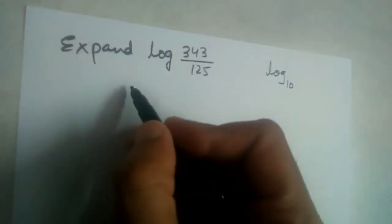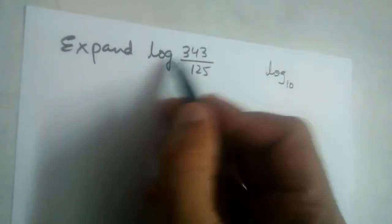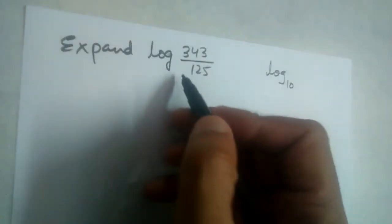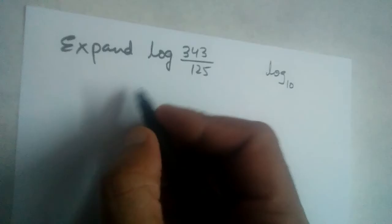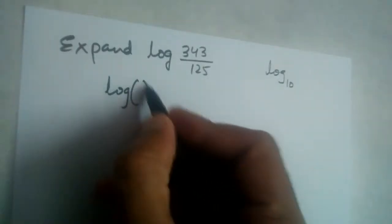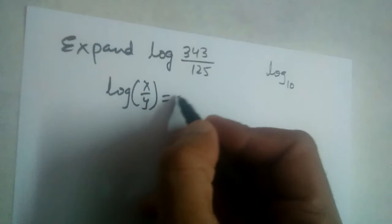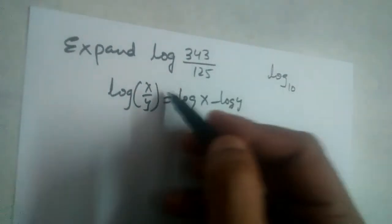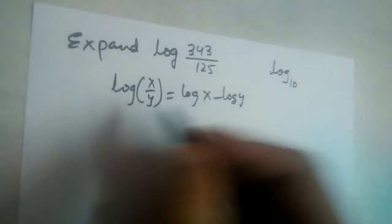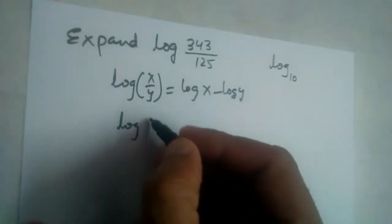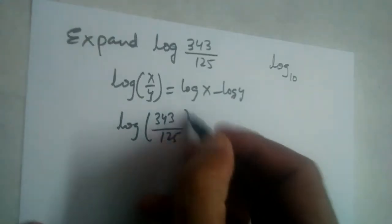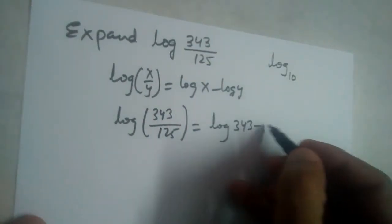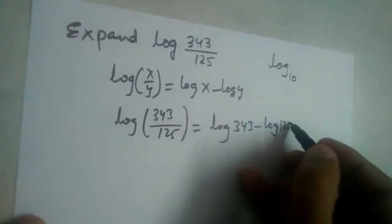So this is base 10: log₁₀(343/125). This is in the form of log(x/y), which equals log x minus log y. When there's division, we subtract the logs. So log(343/125) becomes log 343 minus log 125.